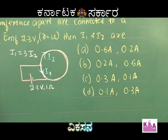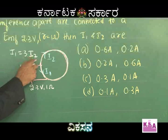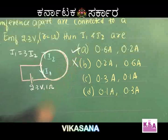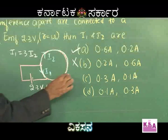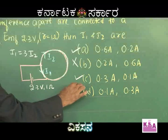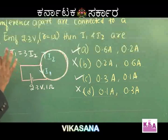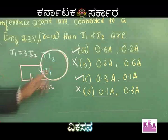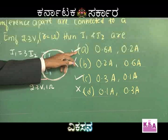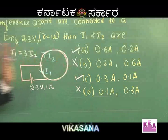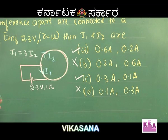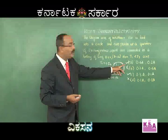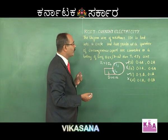I1 is 3 times I2: 0.6 is 3 times 0.2, so option A may be correct. Option B is ruled out. Option C: 0.3 is 3 times 0.1, so option C may also be correct. Option D is ruled out. We have now reduced our options to just A and C — 50 percent elimination already.